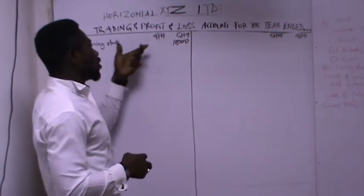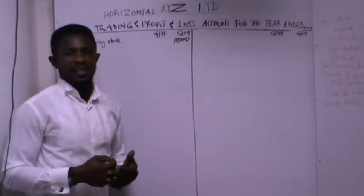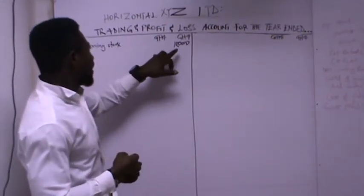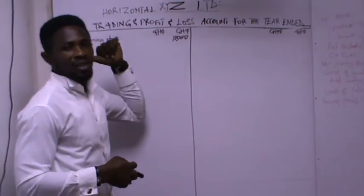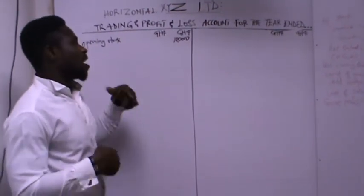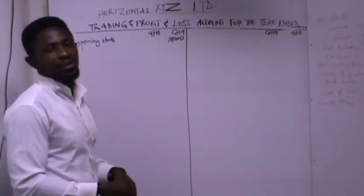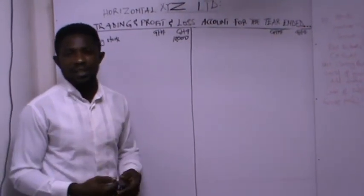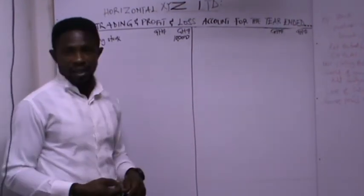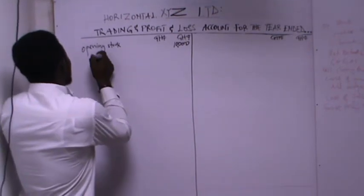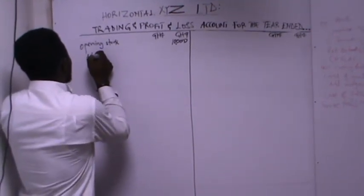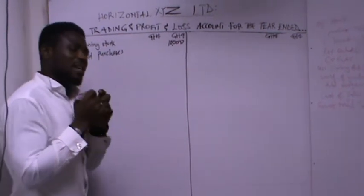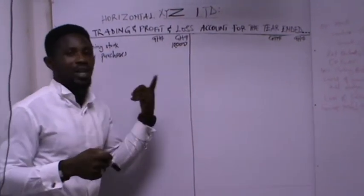After recording your opening stock, you add your purchases. Purchases come in at the beginning of the accounting period. The opening stock is the previous accounting period's closing stock being carried forward. That stock may not be enough to meet customer demand, so you need to go and purchase more in addition. So when you purchase, you add purchases.